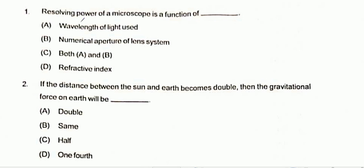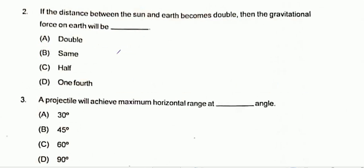Question 1: The resolving power of a microscope is a function of the wavelength of light used and the numerical aperture of the lens system. Option C is the correct one. Question 2: If the distance between the sun and earth becomes double, then the gravitational force on the earth will be one-fourth. Option D is the correct one.